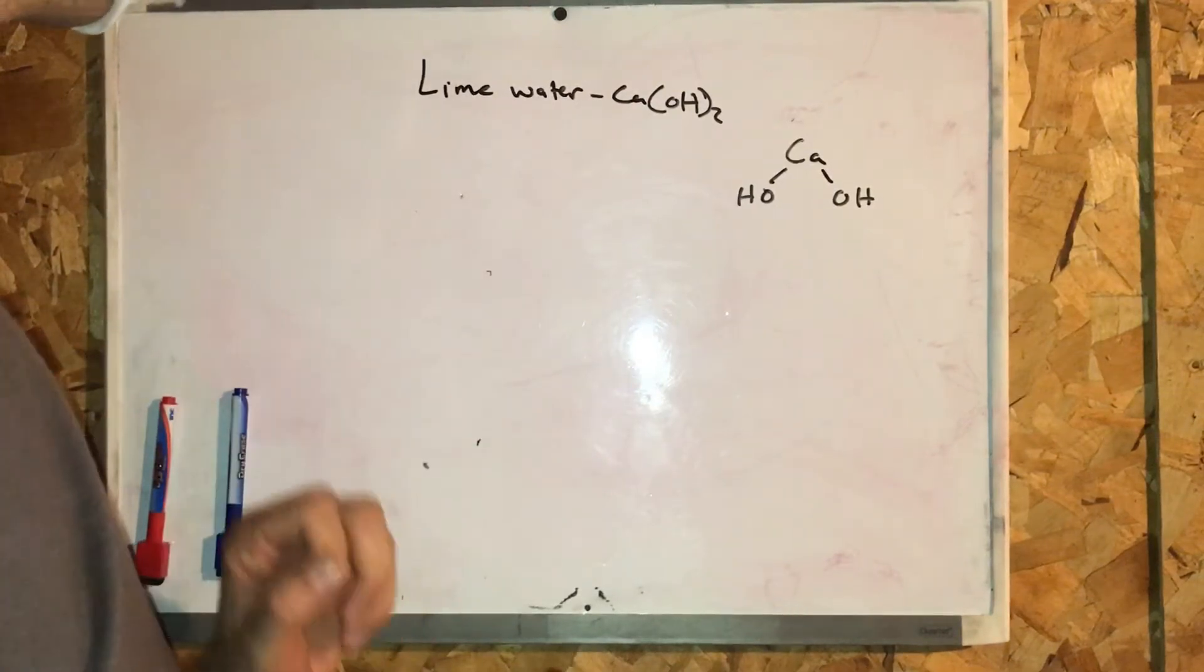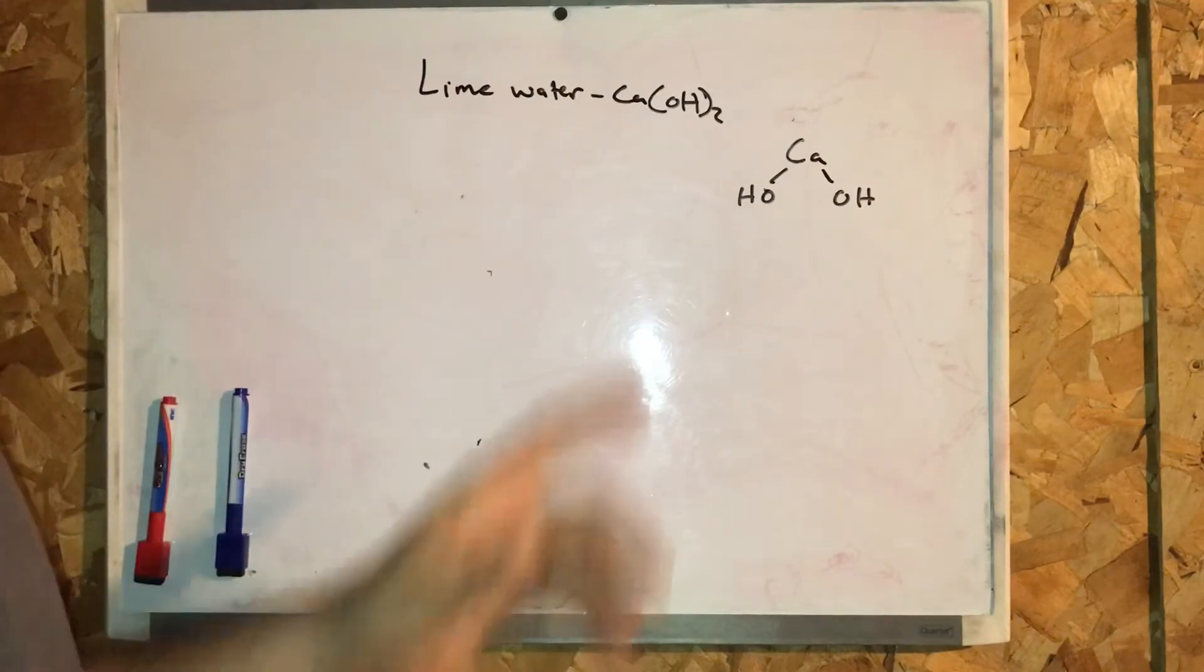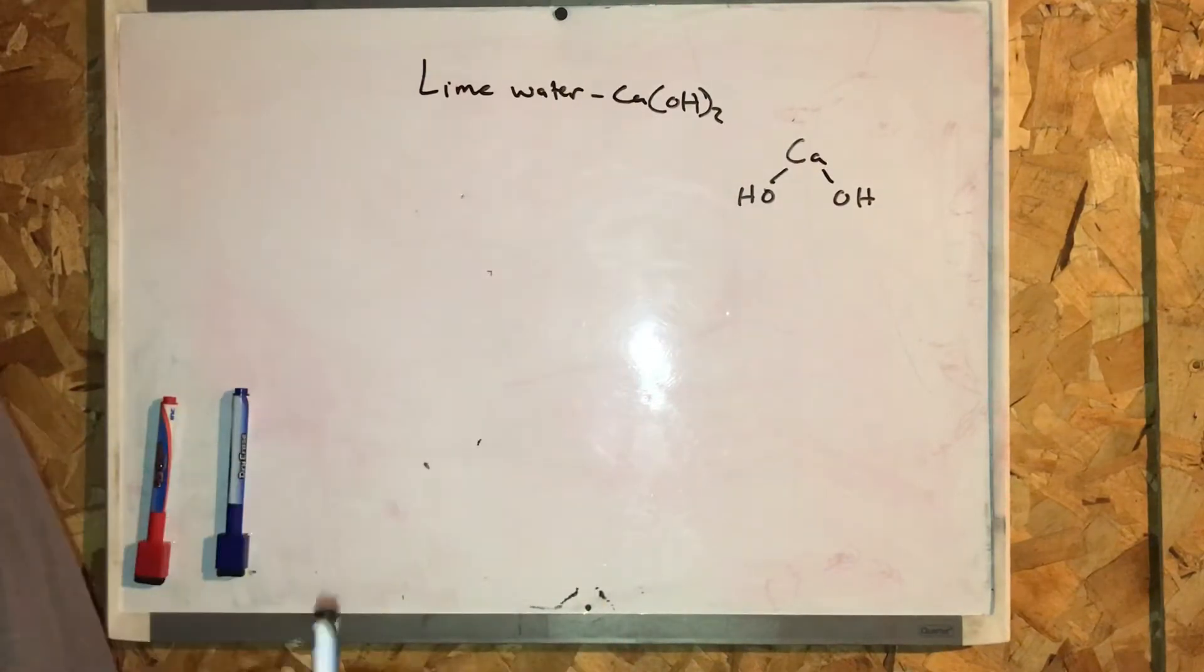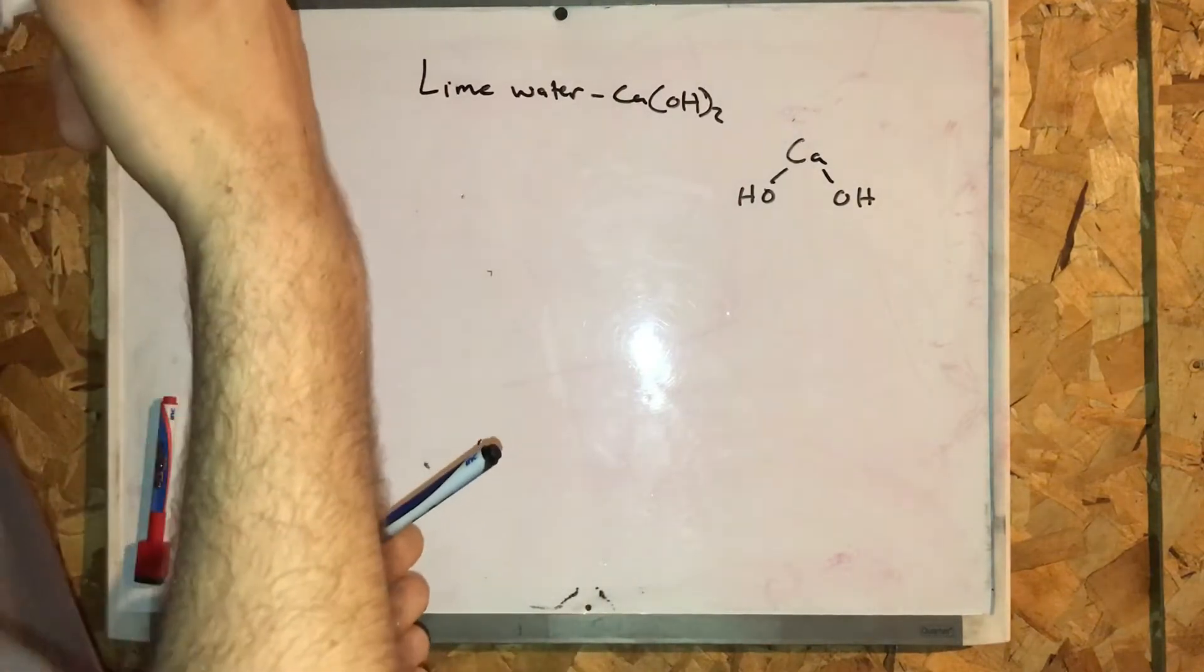In the laboratory I'm going to create something called lime water. Now lime water is chemically written as Ca(OH)2. That's also known as calcium hydroxide.